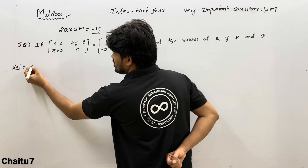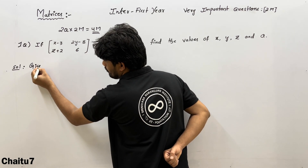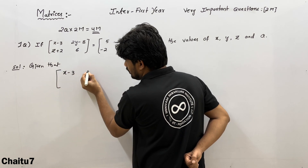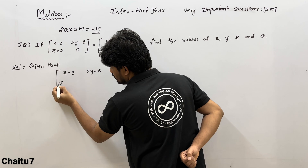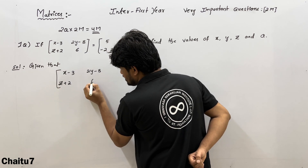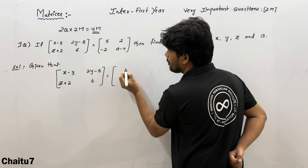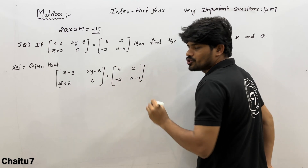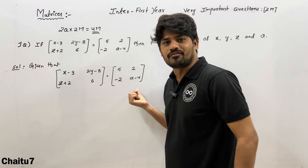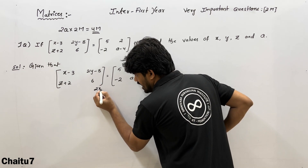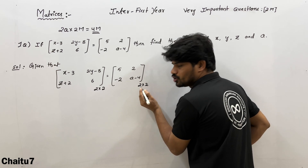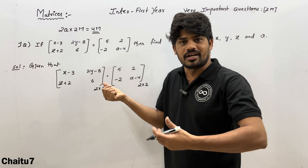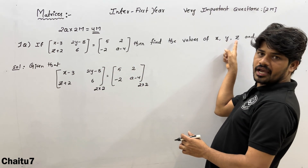Given that matrix [x−3, 2y−8; z+2, 6] is equal to matrix [5, 2; −2, a−4]. Both matrices have 2 rows and 2 columns. By equating corresponding elements of the matrix, we need to find x, y, z, and a.